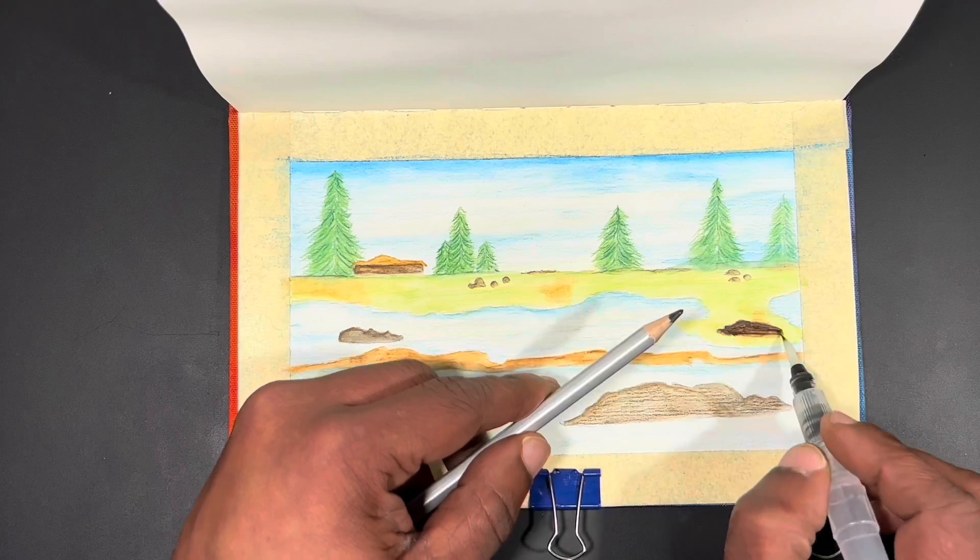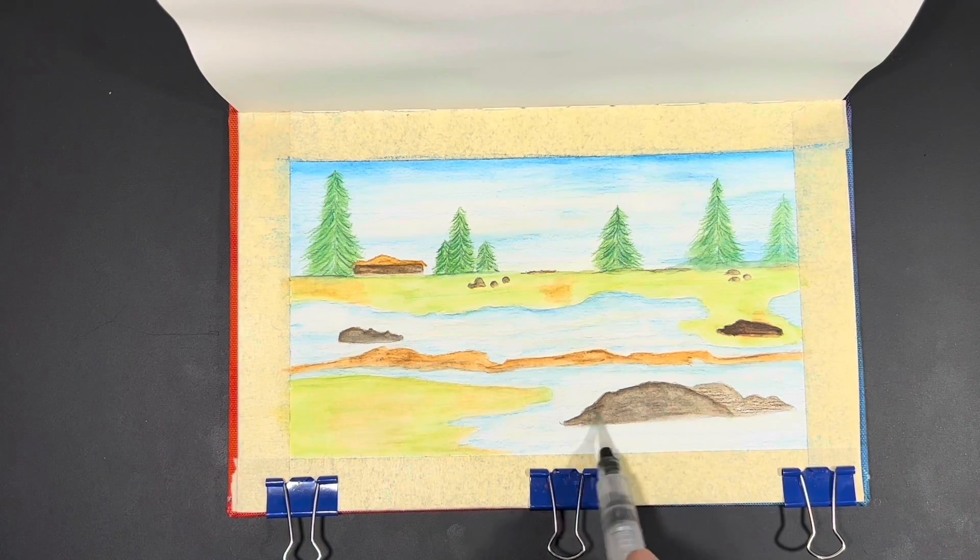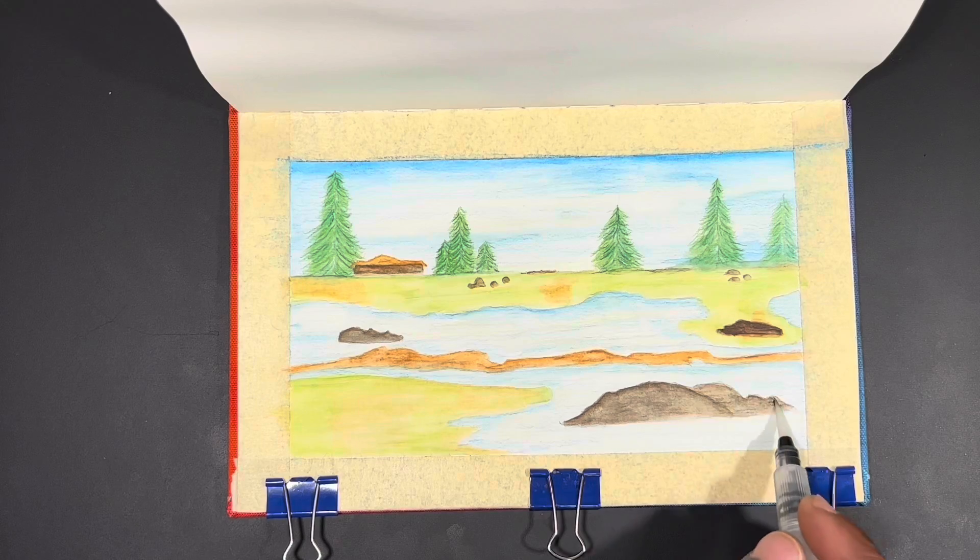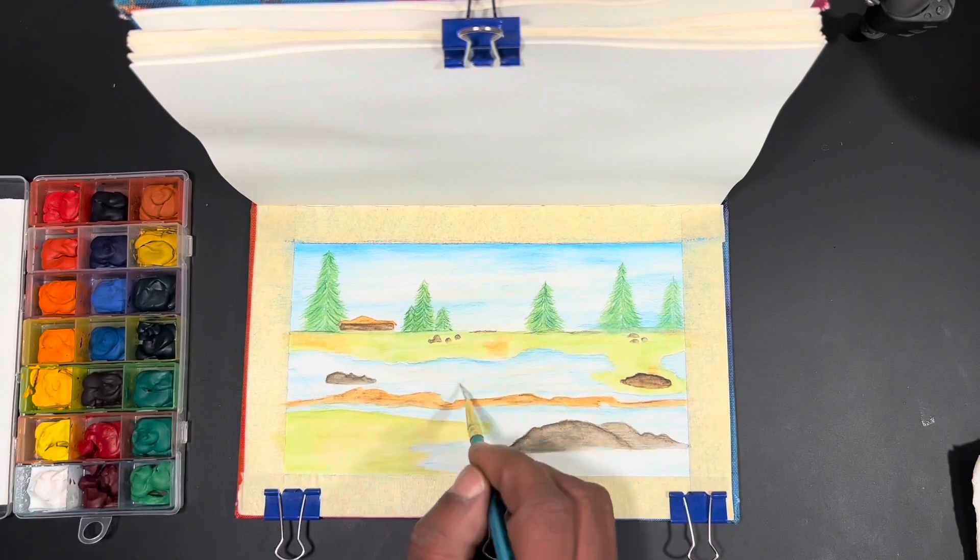And you're going to see me just go back and continue to add more layers to my rocks in order to get them darker and more saturated. And then eventually I'm going to grab some white gouache because you guys know that's what I use most times for highlighting.